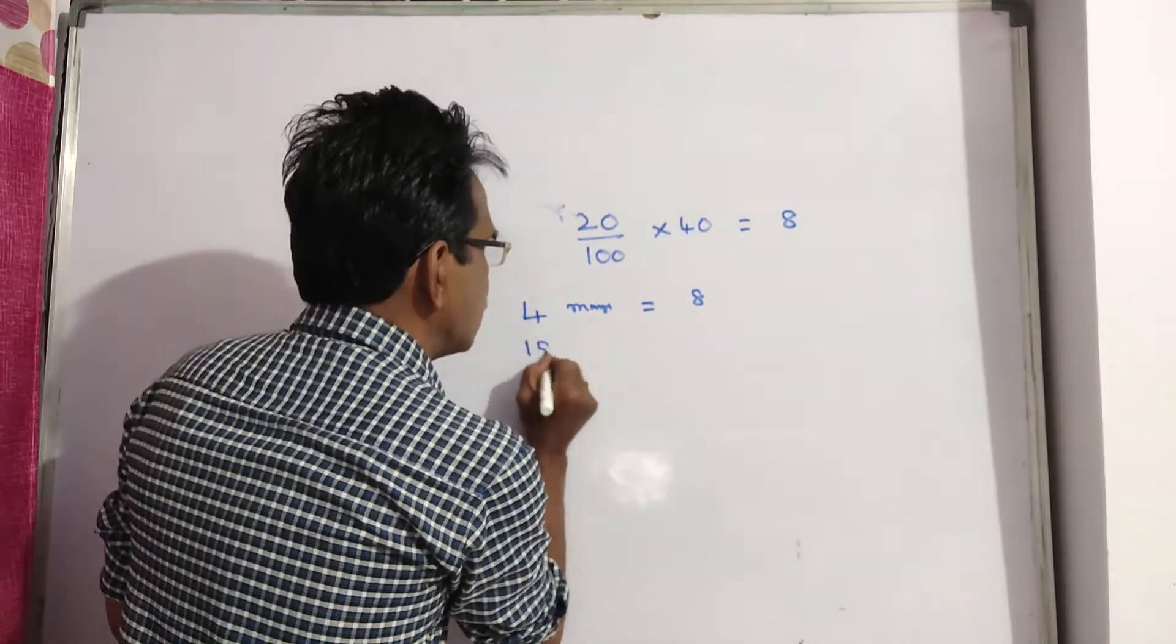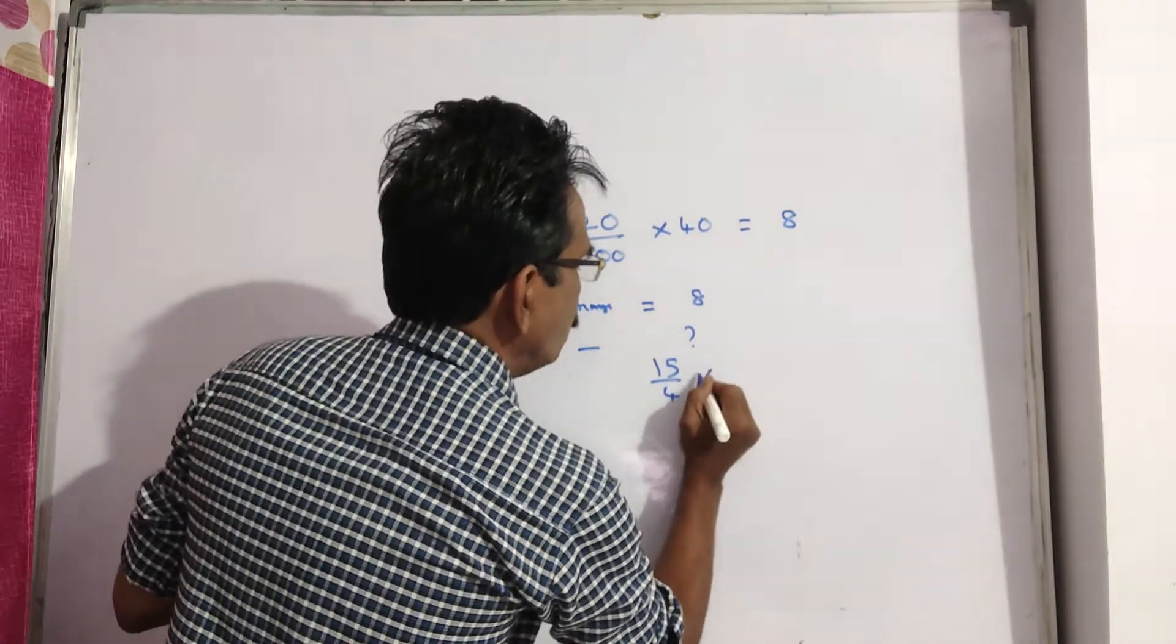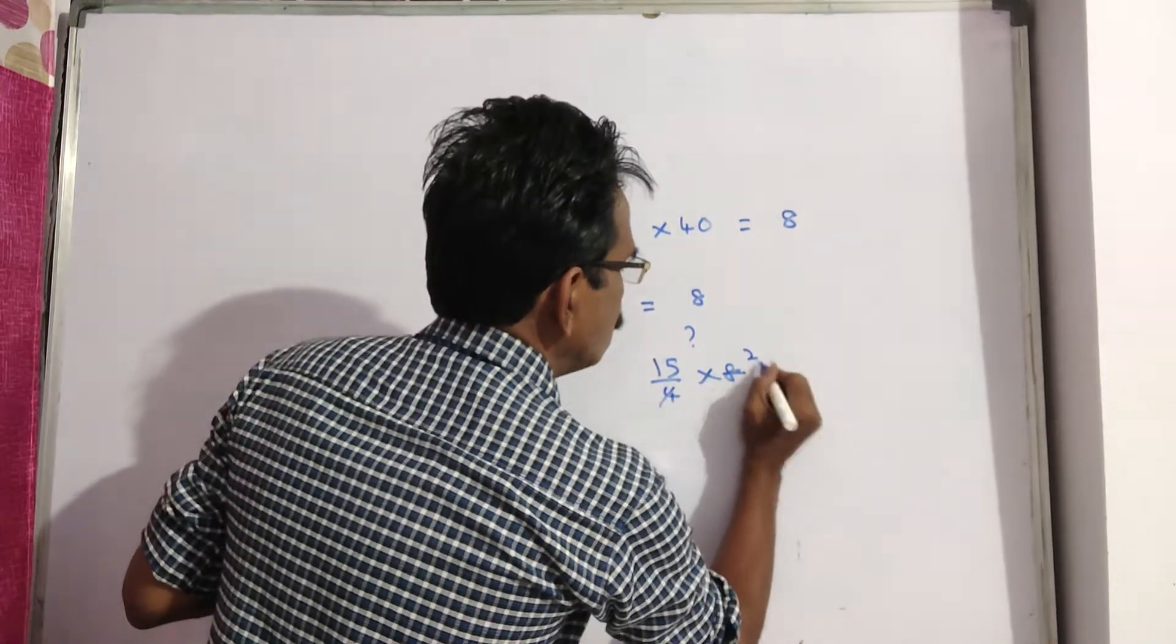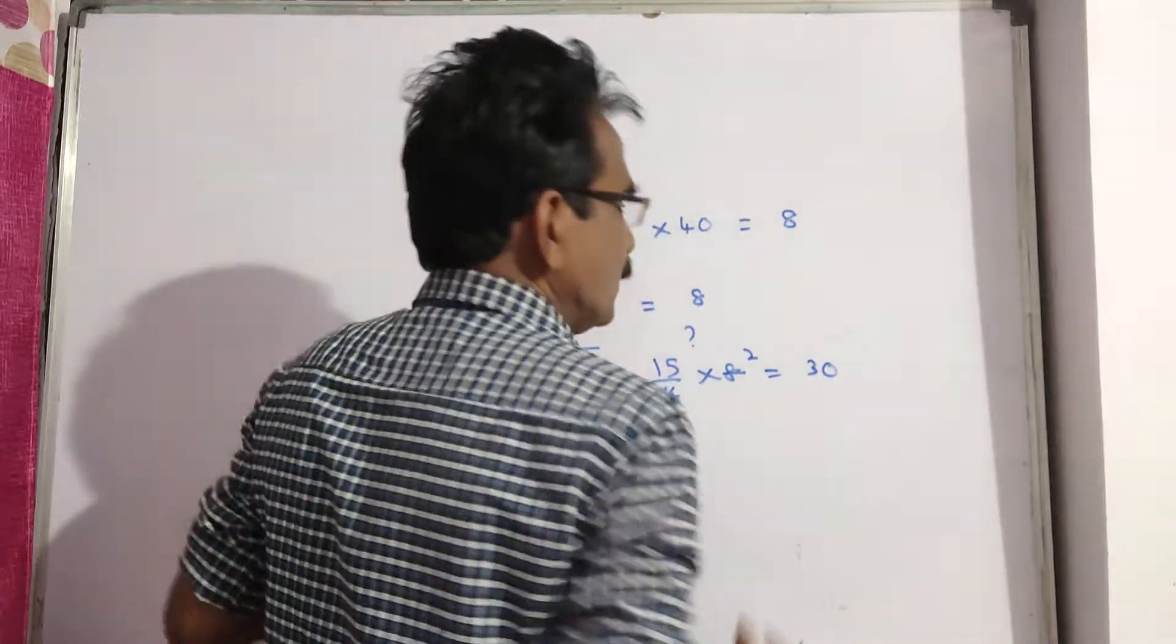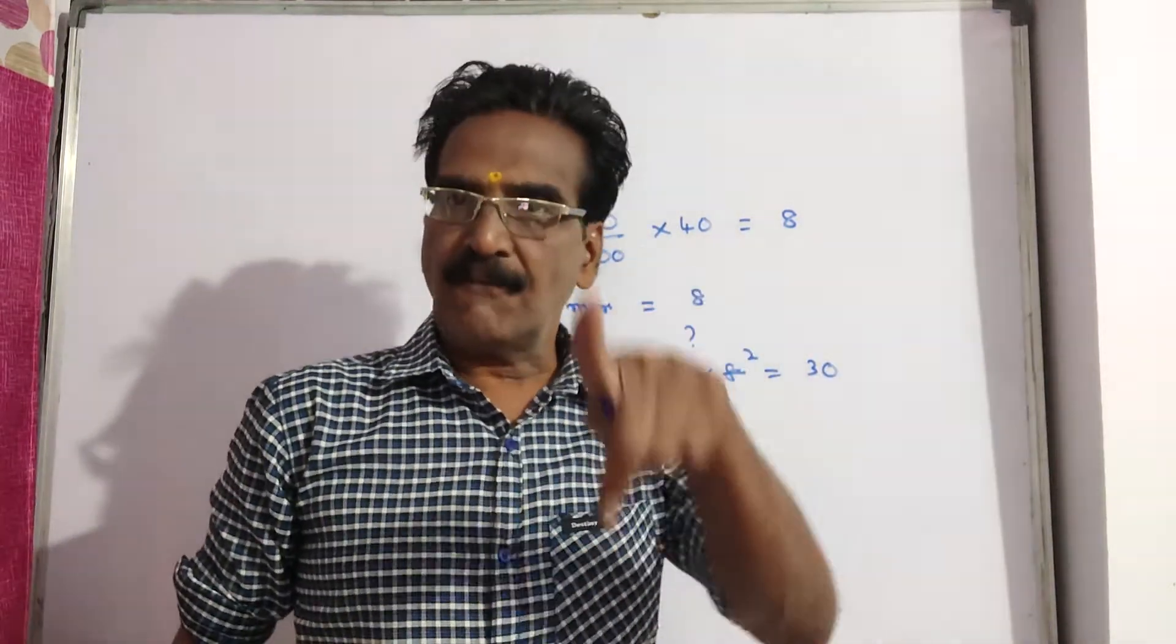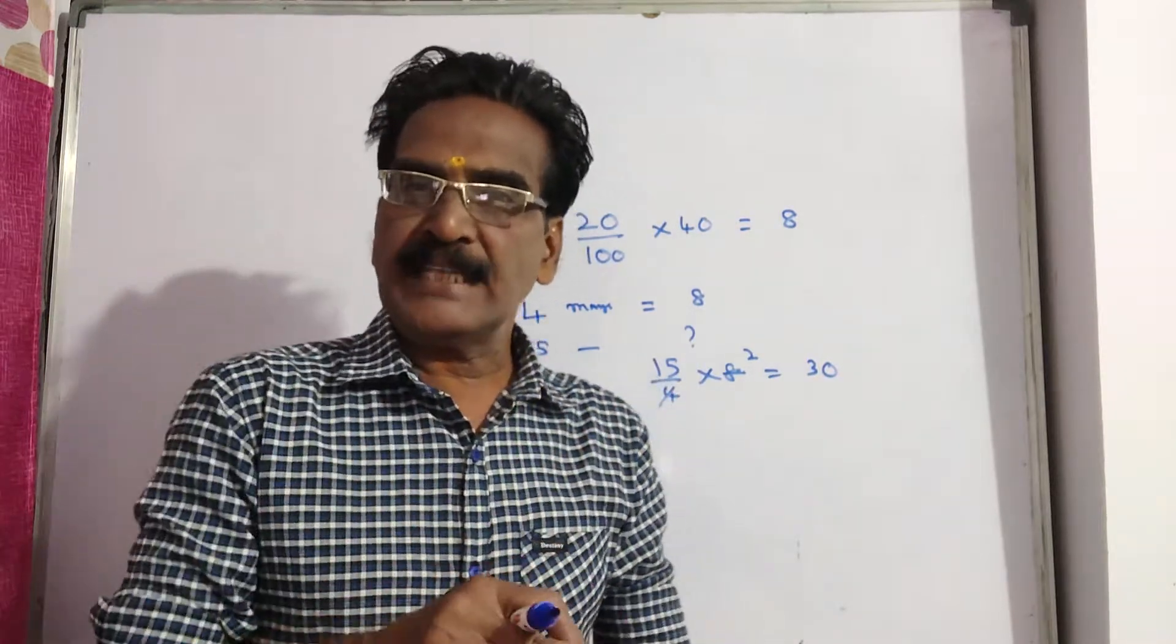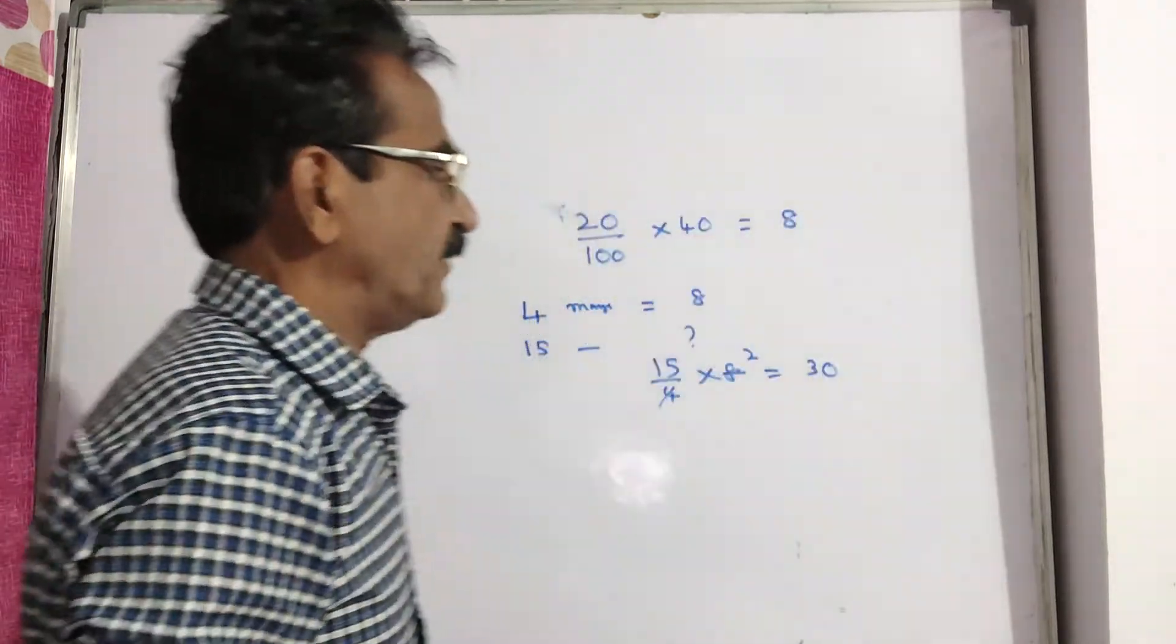So 15 mangoes price: 15 by 4 into 8, for 2 to 15, equals 30. So 30 rupees is the price of 15 mangoes after increase. But we want the original price of 15 mangoes before the increase.